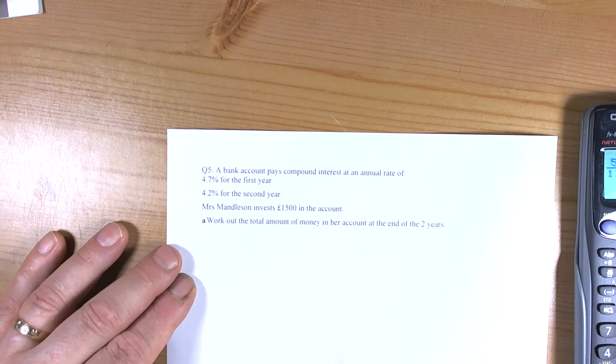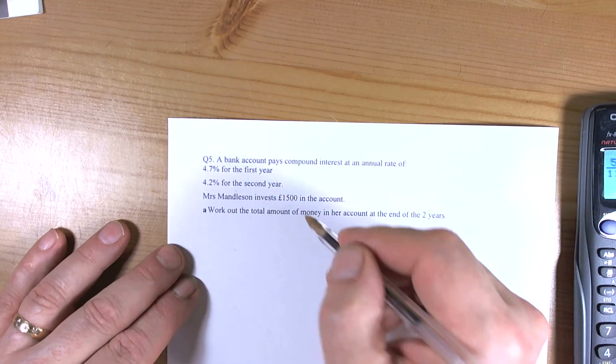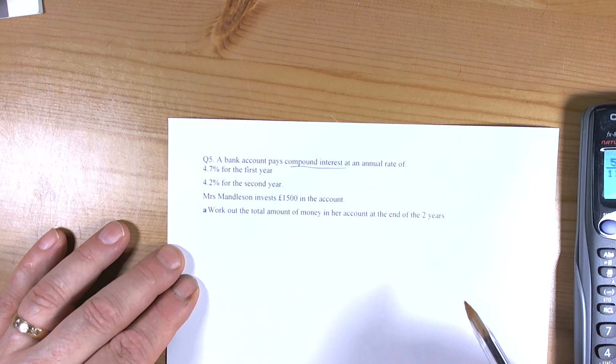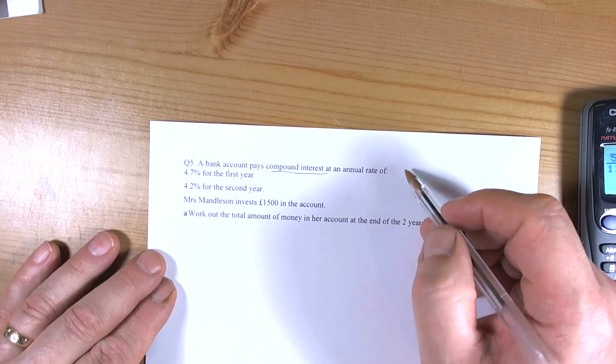So this question talks about a bank account paying compound interest. So that means we're going to be thinking of using a percentage multiplier.